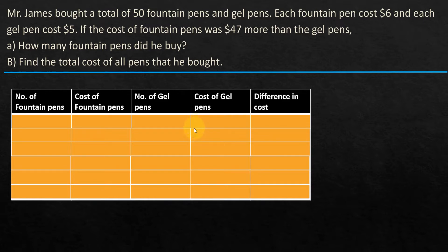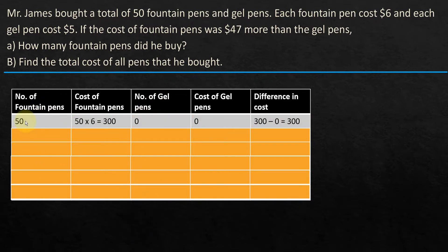What we are trying to do is first guess and check. So assuming there are 50 fountain pens and gel pens in total, let's assume that he bought 50 fountain pens, which means the number of gel pens would be zero. So 50 fountain pens — the cost of one fountain pen is $6, so 50 times 6 gives $300. Number of gel pens is zero, so the cost is zero. The difference in cost between the fountain pens and the gel pens is 300 minus 0, which is $300.